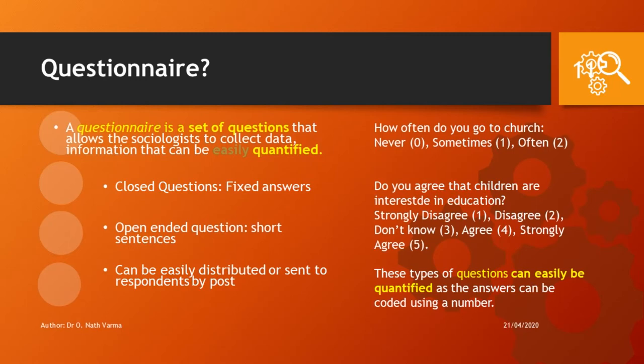First is the questionnaire. A questionnaire is a set of questions designed by the sociologist to gather quantitative data. It can use either closed questions or open-ended questions. Closed questions are questions with fixed answers, whereas open-ended questions are questions where the respondent can give a short answer in written form. However, in questionnaires — because they are concerned with quantitative data, data which can be quantified — sociologists usually make use of closed questions.